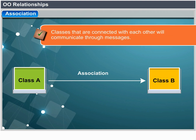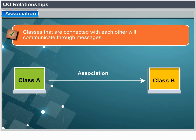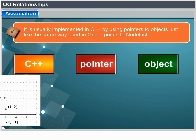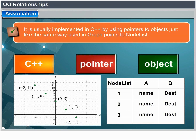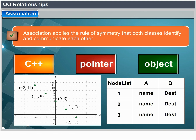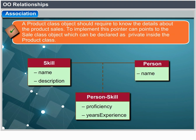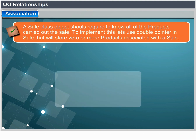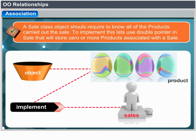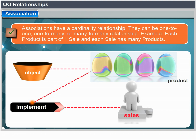Association: classes that cooperate with each other through the model need each other's names to message back and forth. This is usually implemented in C++ by putting pointers to objects in class definitions. Association implies symmetry — both classes know each other and can message each other. For example, a product class object may hold a pointer to a sale class object, and a sale class object may hold a double pointer to store multiple associated products. Associations have a cardinality: one-to-one, one-to-many, or many-to-many — for example, each product is part of one sale, and each sale has many products.